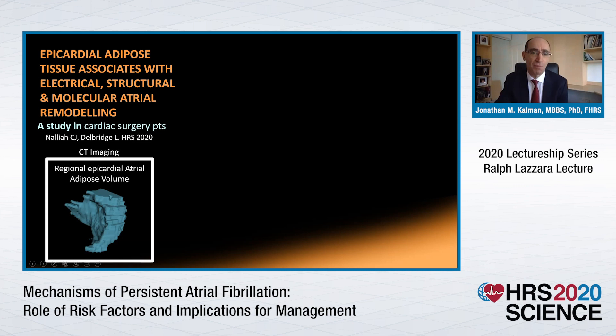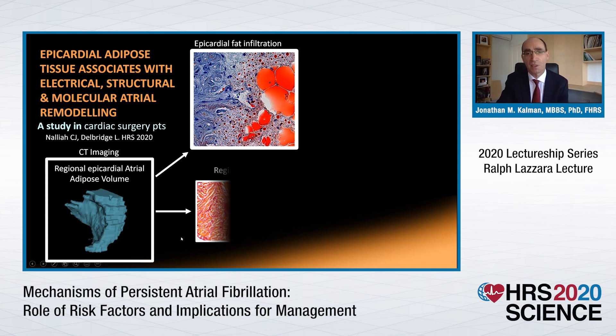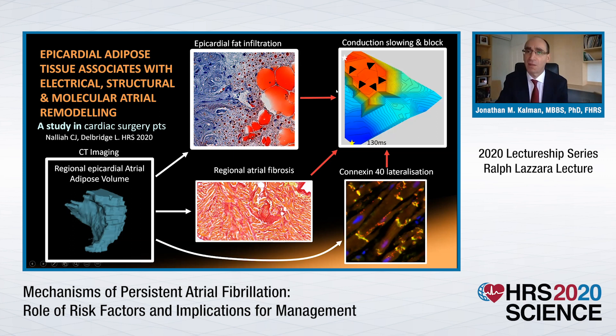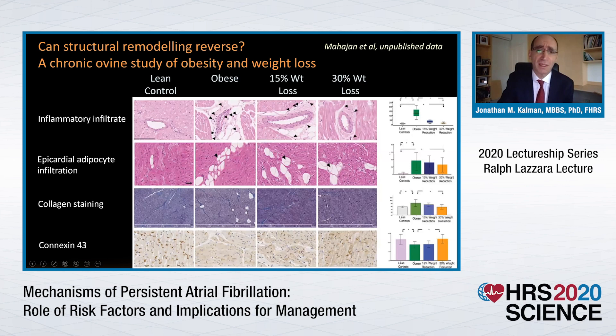In an operating room study, the relationship between regional epicardial atrial adipose volume evaluated with CT imaging and the underlying cardiac structure was examined. Histologically, there was significant epicardial fat infiltration correlating with adiposity, regional atrial fibrosis, and connexin 40 lateralisation away from the ends of the intercalated disc to the sides. Together, these caused significant associated conduction slowing and block, underpinning the impact of obesity on atrial conduction and the substrate for atrial fibrillation.